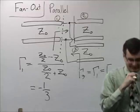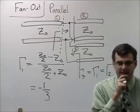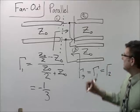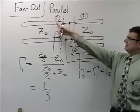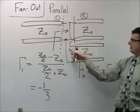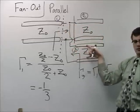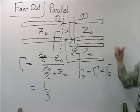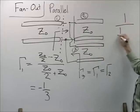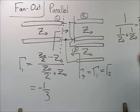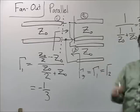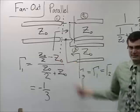To explain why it's Z₀/2: coming down one line, you see Z₀ in parallel with another Z₀. Using the parallel formula — 1/(1/Z₀ + 1/Z₀) — you get Z₀/2 as the effective load. Then plug that into the standard reflection coefficient equation.